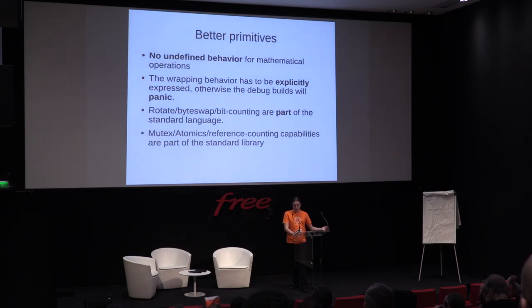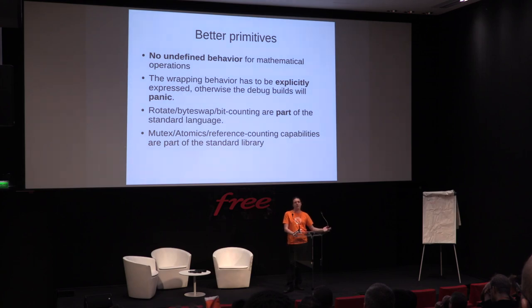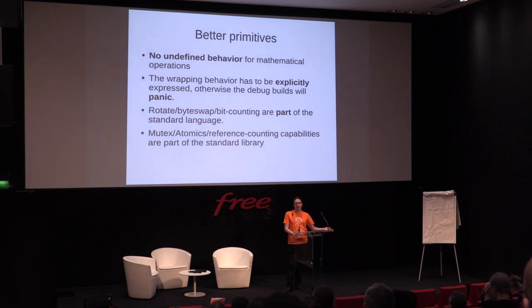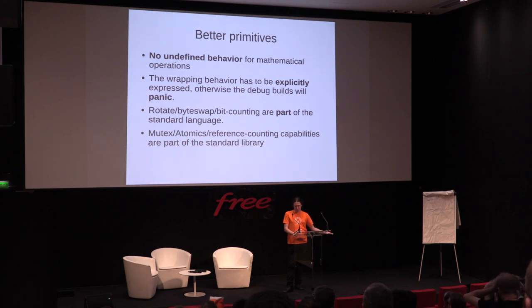What do I mean by better primitives? We all have experience with C. C is a very good language, but sometimes you are bound to hope that the compiler gives you what you want. Some operations that are a single instruction in most CPUs are not directly mapped to constructs in C. If you want a rotate, a byte-swap, or a pop-count, in Rust these are explicit operations — they are part of the language.